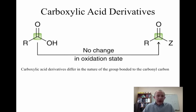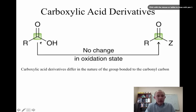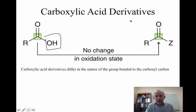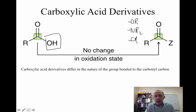So what is a carboxylic acid derivative? A carboxylic acid, remember, is a carbon-oxygen double bond bonded to an OH group. If we change the nature of this group to something else that contains an oxygen — like an OR, an NR2, or a chlorine — these are going to be different derivatives. So Z, in this case, can either be an OR, NR2, or chlorine, and these are going to be different carboxylic acid derivatives.